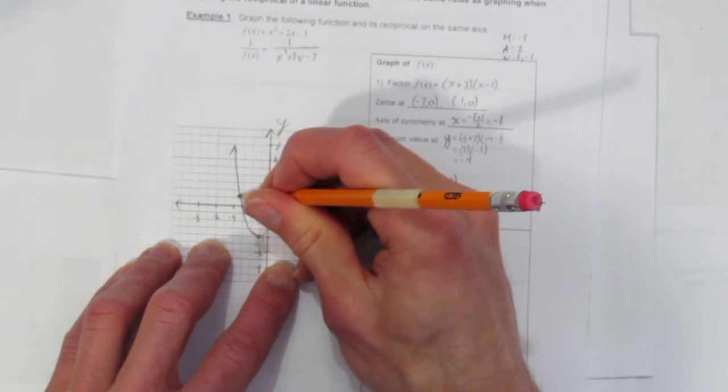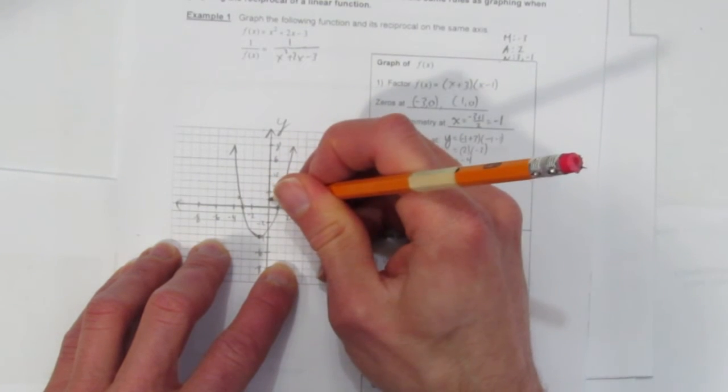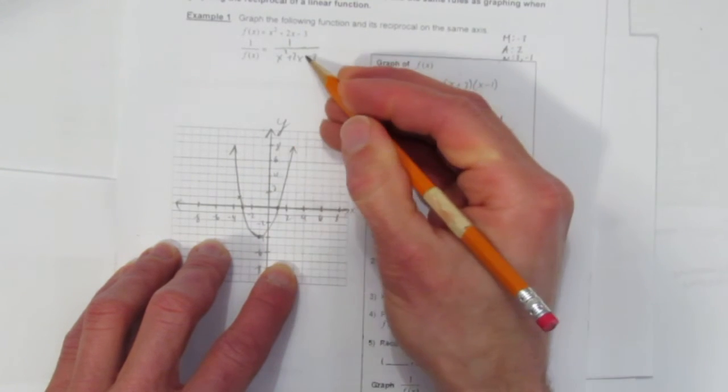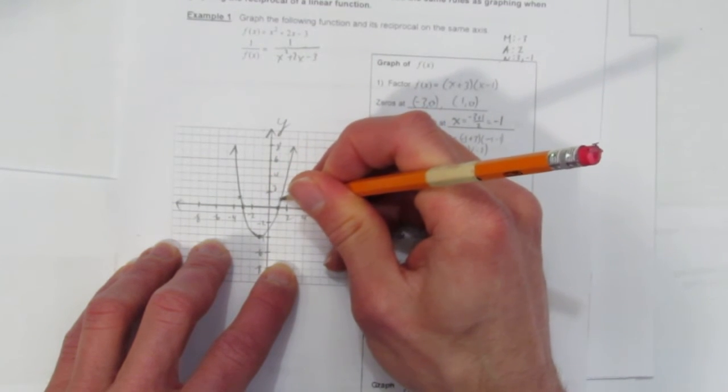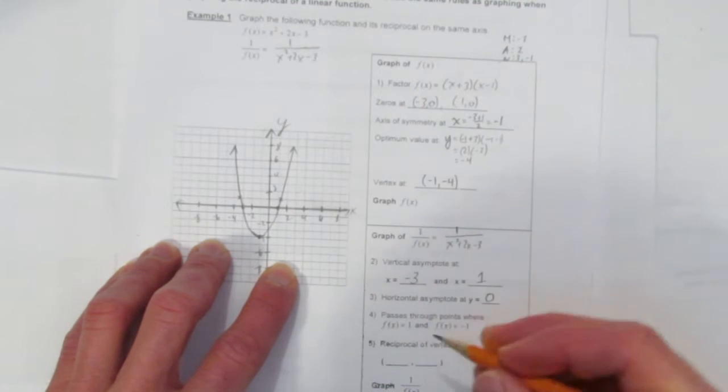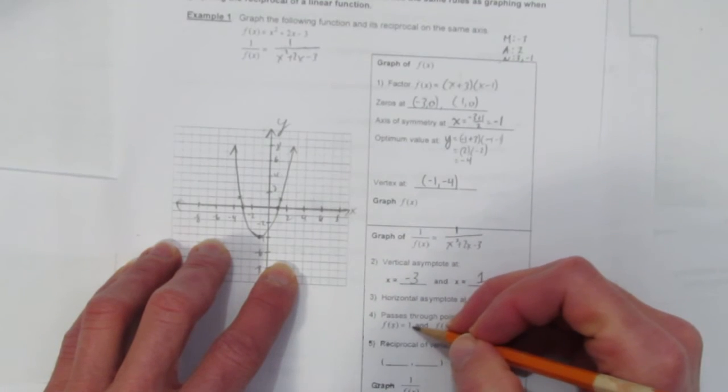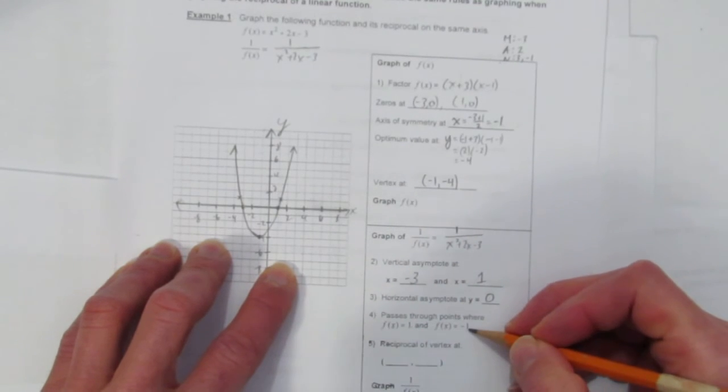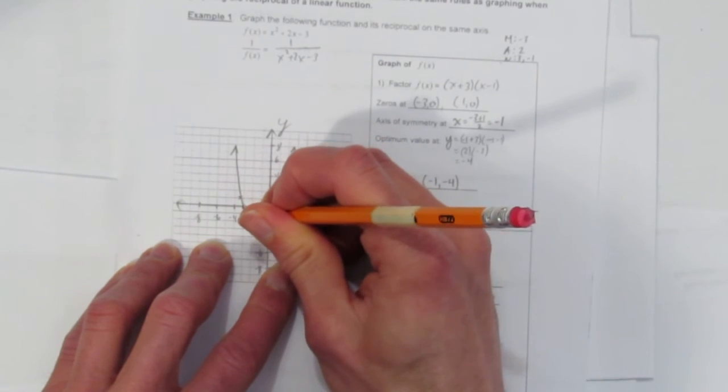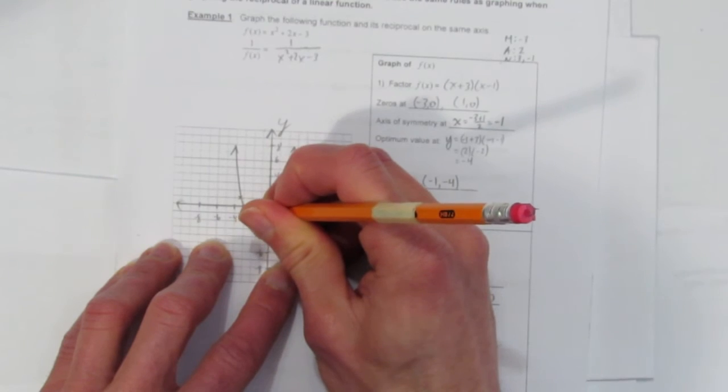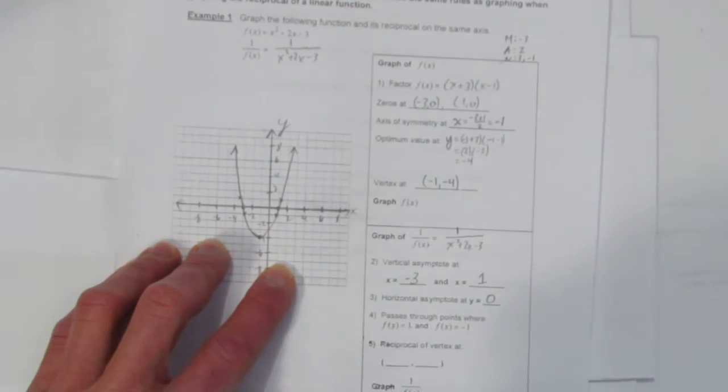Here's where the y is a height of 1. This is y of 1. The reciprocal has to pass through here and here, both places where the function originally has a height of 1. And also where it has a height of -1. That's here, at -1 for y, and here also at -1 for y. So those x's have to be shared.